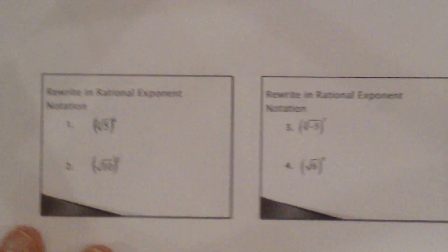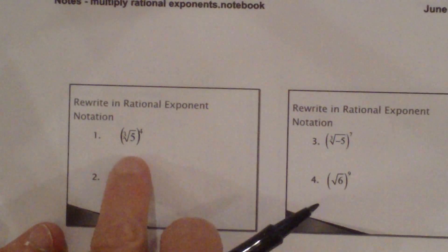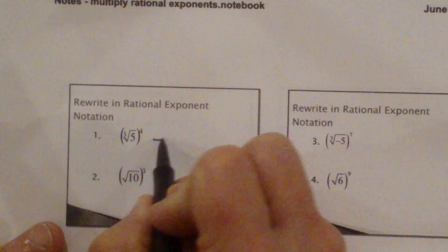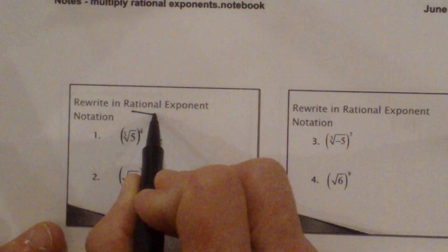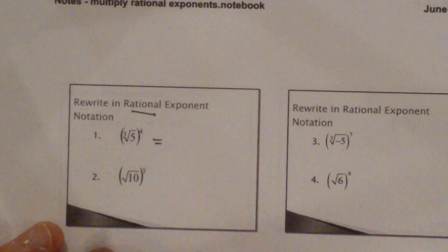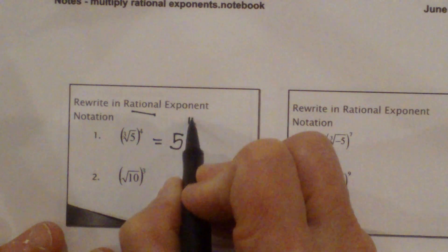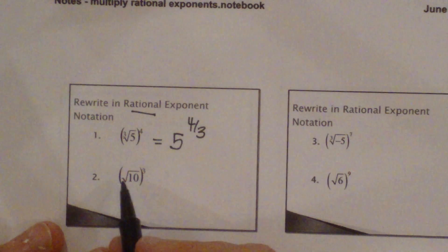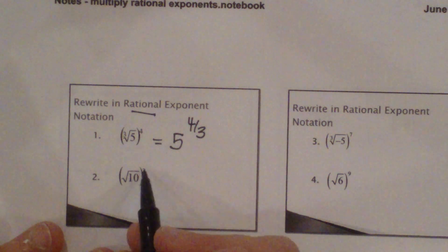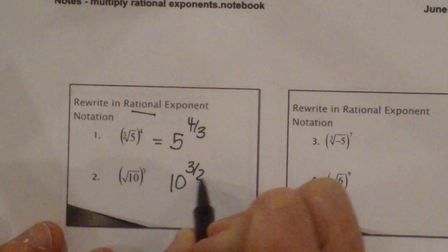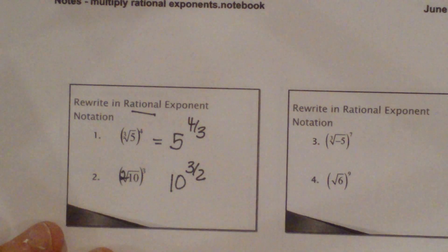Now let's look at a couple of rewriting problems. We have the cube root of 5 all to the 4th. If we want to write that as a rational exponent, we're just going to write that as 5 to the 4 thirds. And the square root of 10 cubed becomes 10 to the 3 halves — because if you remember, the square root is just an assumed 2.